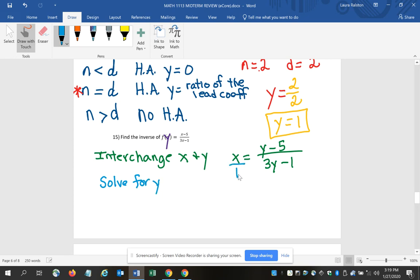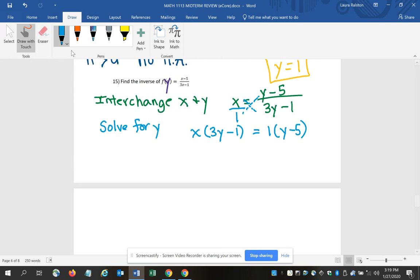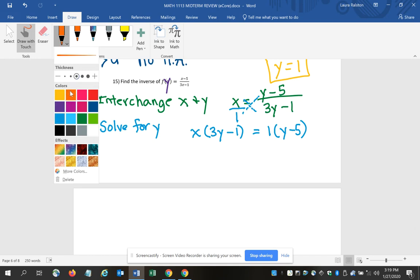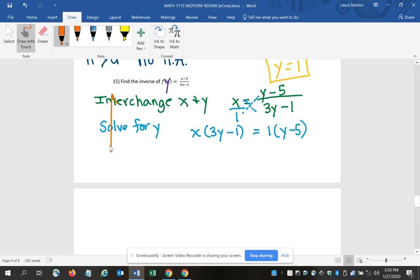So I'm going to put the x over 1 so that I have a fraction or a ratio equal to a ratio and I can solve by cross-multiplying. So I'm going to have x times 3y minus 1 equals 1 times y minus 5. Then I've got to do some algebra and it's going to take me a little bit of space and a little bit of time to do that.